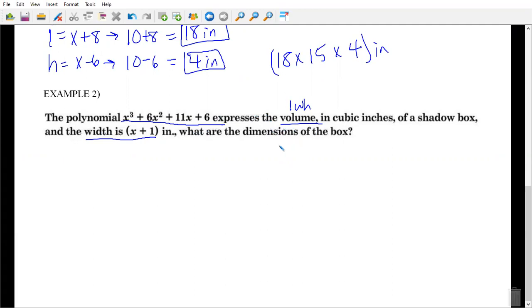So to find the other dimensions, we have to use division. So hopefully you chose to use synthetic. So negative 1. And we have 1, 6, 11, 6. We're going to bring down our leading coefficient. Negative 1 times 1 is negative 1. 6 minus 1 is 5. Negative 1 times 5 is negative 5. 11 minus 5 is 6.